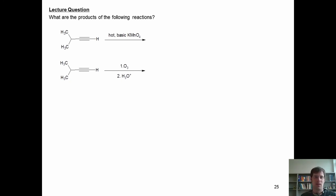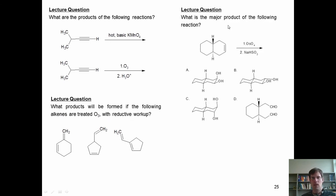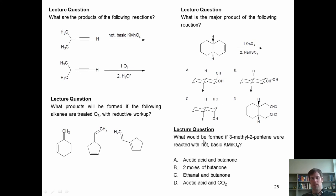Alright, let's put all of this stuff together. I want you to tell me what are the products of the following reactions. What products will be formed if the following alkenes are treated with ozone, followed by reductive workup? What is the major product of the following reaction? And what would be formed if 3-methyl-2-pentene were reacted with hot, basic KMnO4?